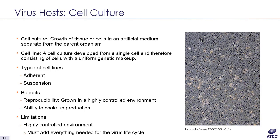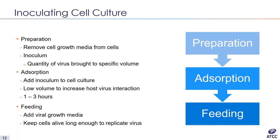Since cell culture is an artificial environment, the virus growth media must contain everything the virus needs to complete its life cycle that the host cell might be lacking, such as enzymes or nutrients. The inoculation step for cell culture involves three basic steps: preparation, absorption, and feeding. In the preparation step, both the host and the virus need to be prepared for infection — for the host cells, this usually means removing the cell growth media.